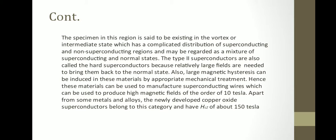Hence, these materials can be used to manufacture superconducting wires which can be used to produce high magnetic fields of the order of 10 tesla. Apart from some metals and alloys, the newly developed copper oxide superconductors belong to this category and have Hc2 of about 150 tesla. So these are called the hard superconductors, and they require a lot of magnetic field to create a normal conducting state, and their applications are very large.